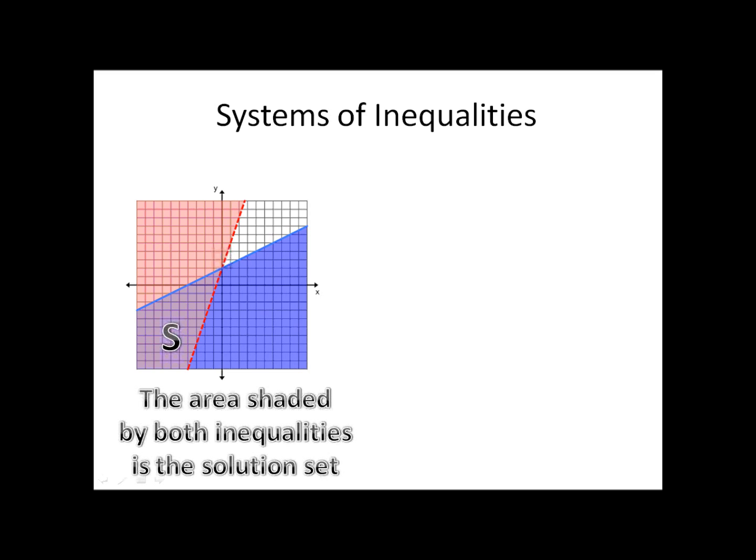The solution set contains x and y values that you can plug into both inequalities to make them true at the same time. It's just like a system of equations, except now there's really an infinite number of possible combinations. You can pick anything in that solution set, anything in the purple area, and it will work in both equations.